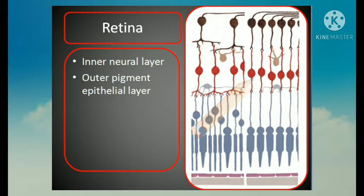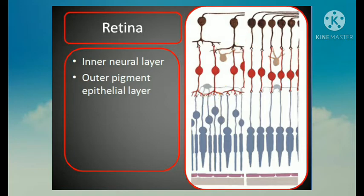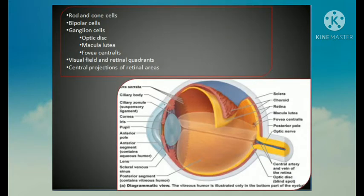The bipolar cells are bipolar neurons interposed between the photoreceptor cells and ganglion cells. The ganglion cells are large multipolar neurons forming the last retinal link in the visual pathway. The axons of ganglion cells form a layer of nerve fibers adjacent to the vitreous humor. These fibers converge towards the round area known as the optic disc.